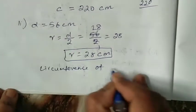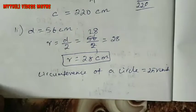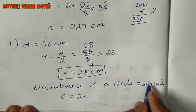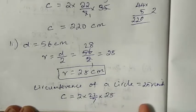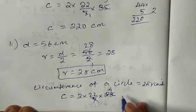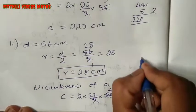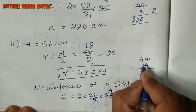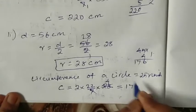Circumference of a circle — the formula is 2πr units. So C equals 2 into pi value 22 by 7, radius r value 28. Cancel: 7 and 28 cancel, 7 fours are 28. Multiply: 2 into 22 is 44, 44 into 4 is 176. So circumference equals 176 cm.